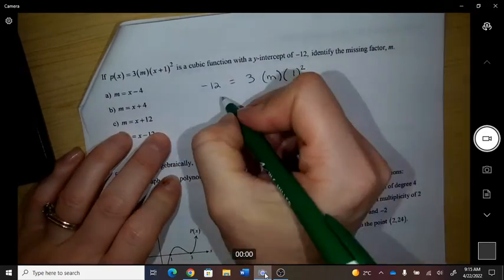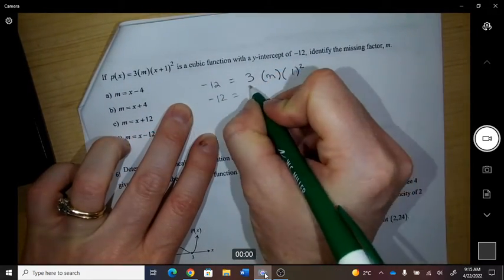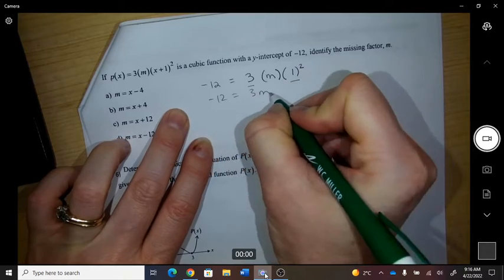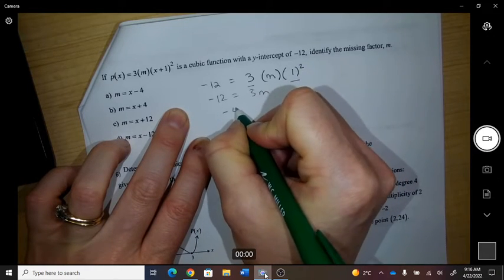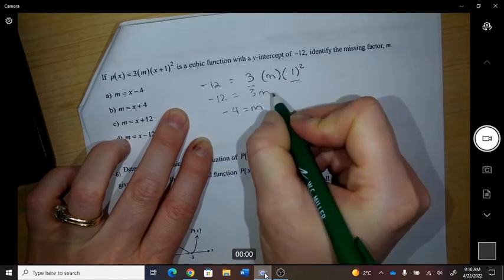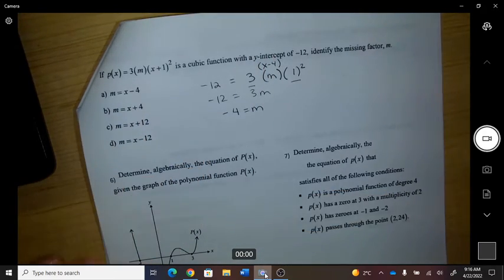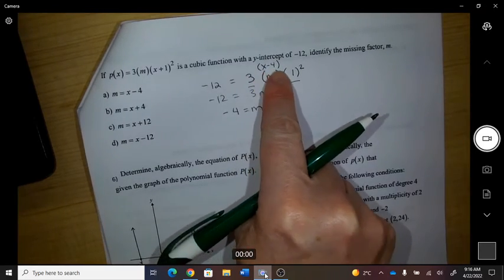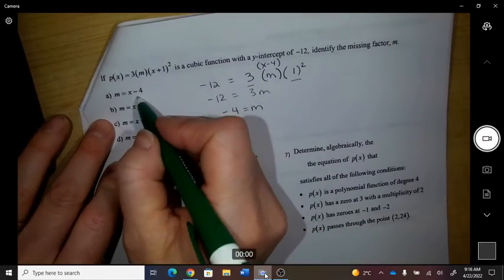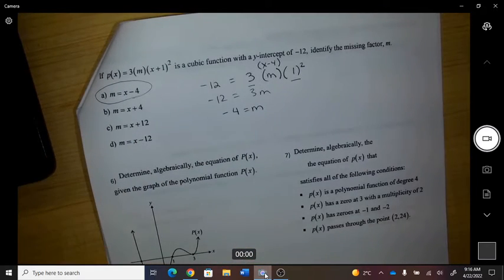So if I multiply this and this, that's 3, so negative 4 equals m. Therefore this factor would have been x minus 4, to cause 0 minus 4, so that's a.